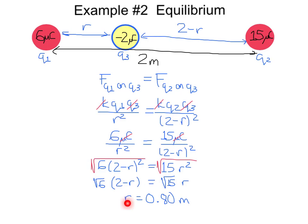We find that r is 0.8 meters, so the negative 2 microcoulomb charge should be placed 0.8 meters away from the 6 microcoulomb charge. At that point it will be in equilibrium and remain there.